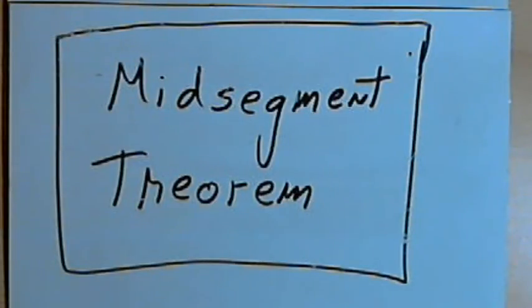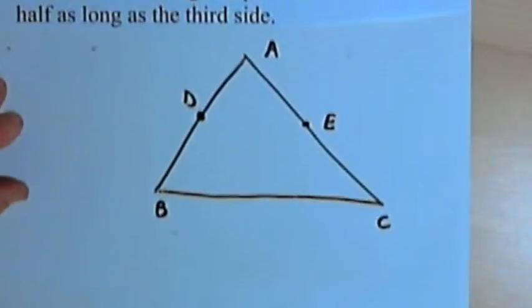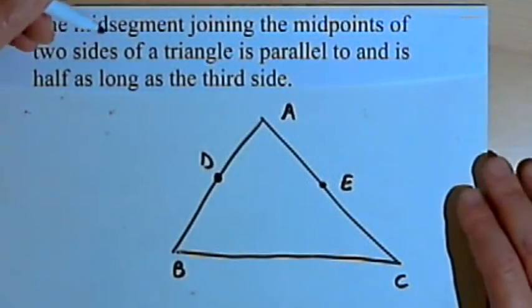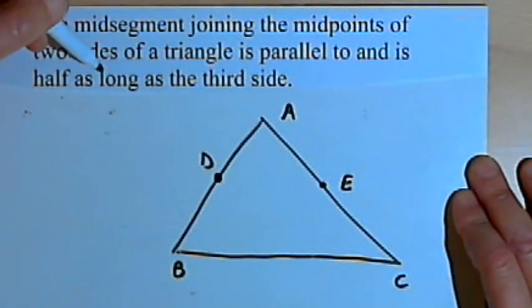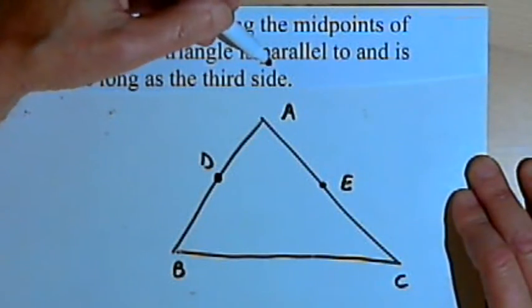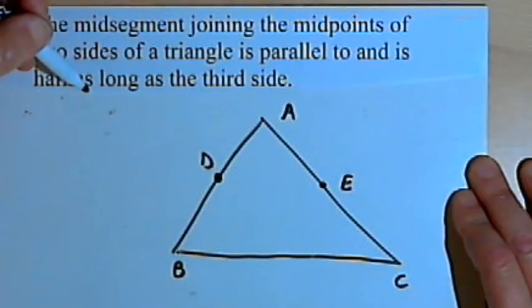This video is provided as supplementary material for courses taught at Howard Community College. In this video I'm going to talk about the triangle mid-segment theorem. Here's what that theorem says: the mid-segment joining the midpoints of two sides of a triangle is parallel to and is half as long as the third side.